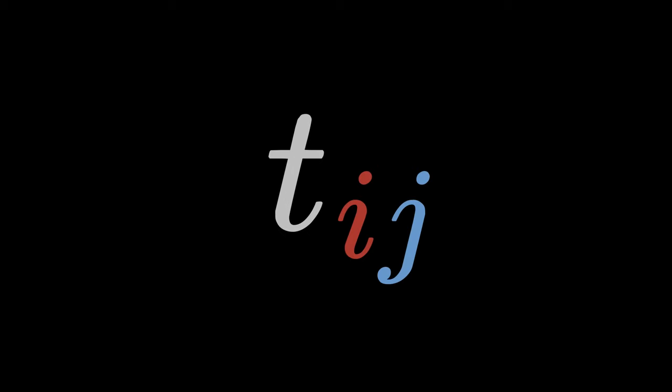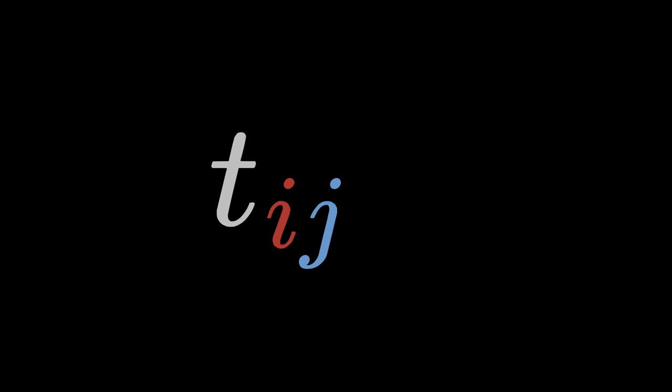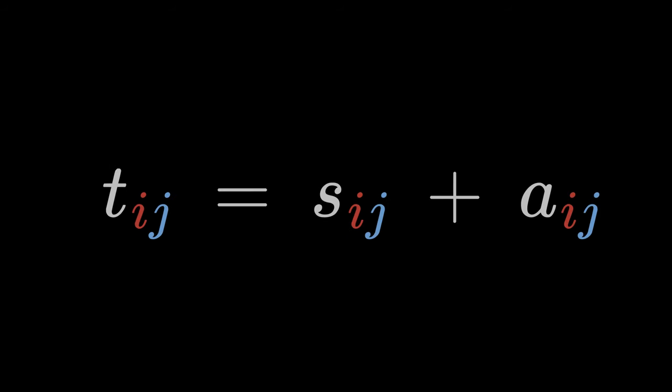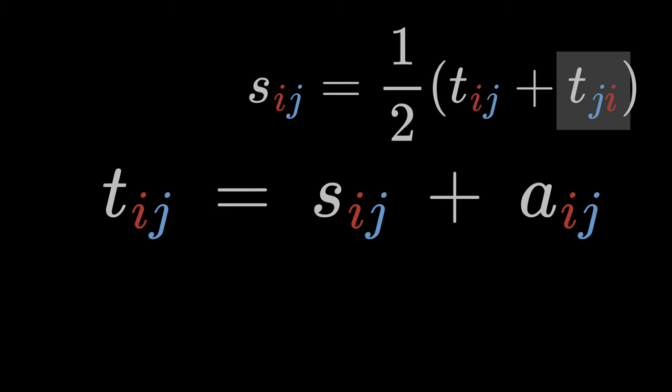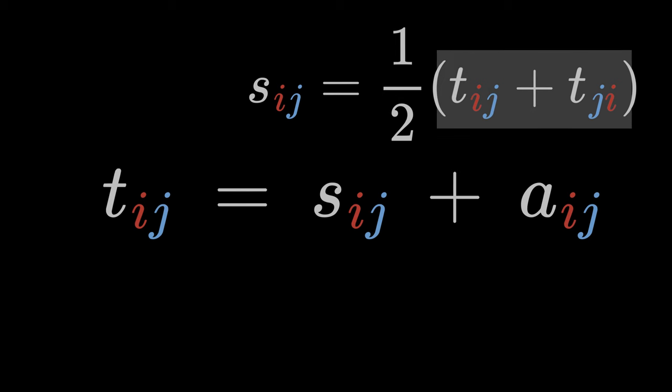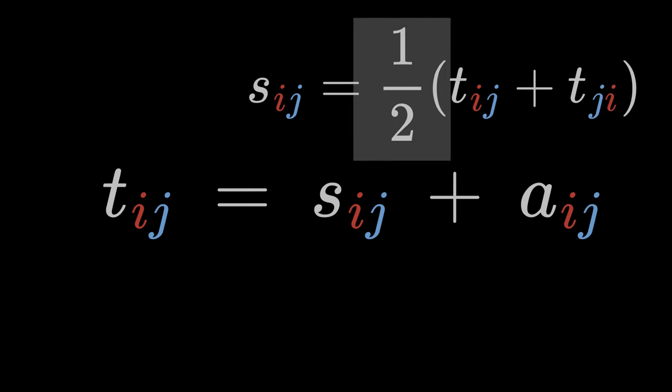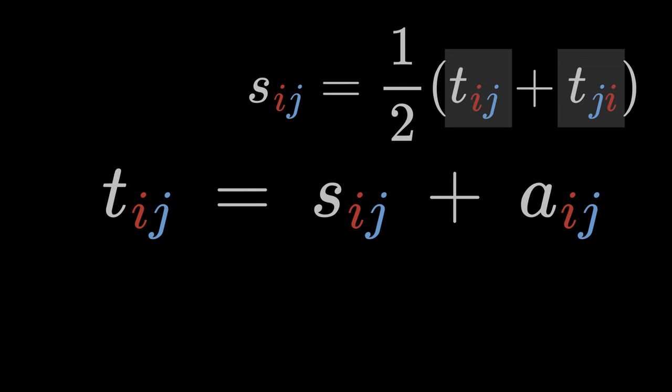Let's take a look at how we practically split a general second-level tensor T into its two parts. The symmetric part S of the tensor T is one half times Tij plus Tji. In the second term, we have swapped the two indices. Then we added the two tensors together. The factor of one half is important because we have counted the tensor twice here.